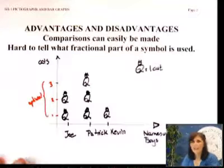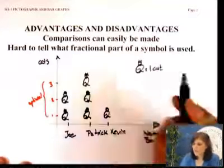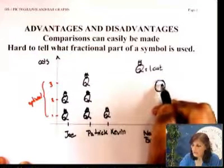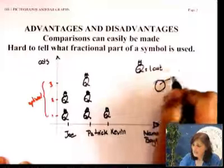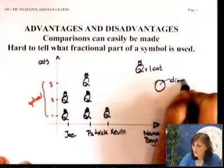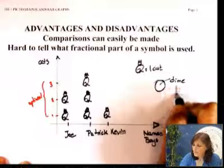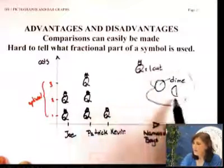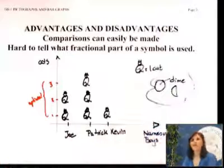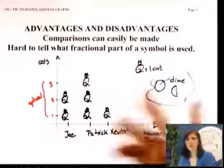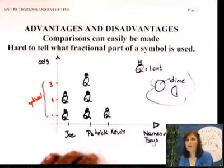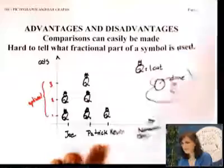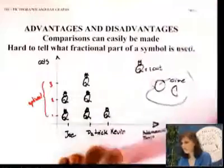It may happen that we're not talking about a cat, but we're talking about money. Here's a coin, and let's say this one is a dime. And if you want to say half of a dime, you can show it like that — so you can show fractional things that way. But the problem is, if you have something like two-thirds, it is harder to divide a picture into two-thirds than giving you a number. So a pictograph may not be the best choice for those kinds of things.